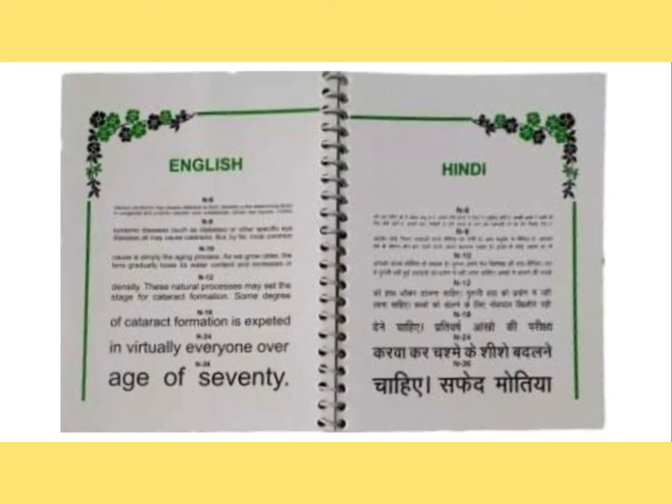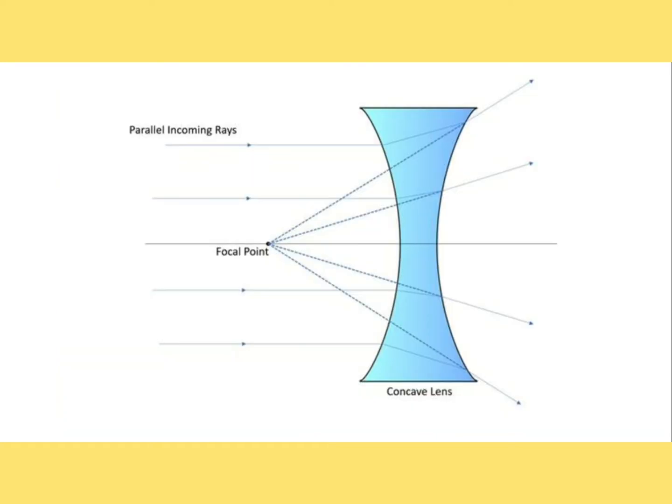Before starting the test, give the patient their BCVA — that is, best corrected visual acuity — then after placing the BCVA in the patient's trial frame, give the patient a near reading target and instruct the patient to view the N8 letter at about 40 centimeter distance. Then start putting minus lenses in minus 0.50 diopter steps, binocularly.